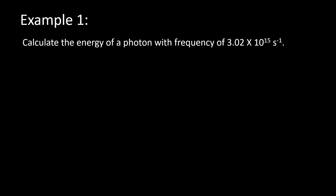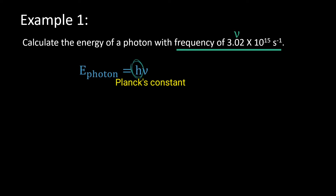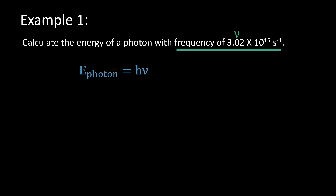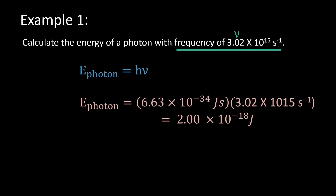For example, in this question you want to calculate the energy of a photon with frequency given. Step one: list out the information given, which is the frequency of the photon. Step two: choose an appropriate formula which relates frequency and the energy of photon — energy of photon equals Planck's constant multiplied by the frequency of the photon, because this formula relates the energy of photon you want to find with the frequency given. Step three: substitute the information into the formula to get the final answer.